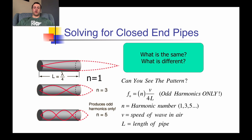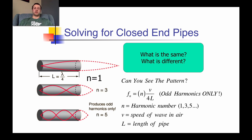Numerically, this shows up as N — the harmonic number — times V, the speed of wave through air, divided by 4L instead of 2L. It's because our fundamental frequency means the pipe length equals a quarter wave, so four times the pipe length gives the wavelength. For the third harmonic, three quarters of a wave equals the length; for the fifth harmonic, five quarters of a wave. It expands by five quarters, seven quarters, nine quarters — we physically can't produce an even harmonic here.